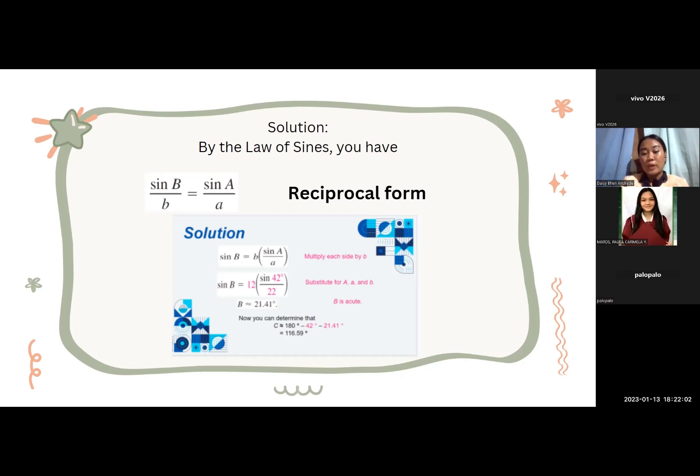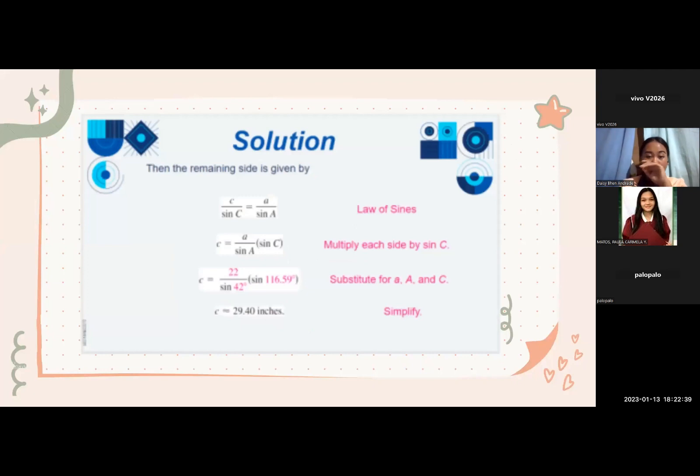So, this will lead us to angle B, which is 21.41 degrees. Now, you can determine that angle C is approximately the answer when we subtract all the angles from 180 degrees. So, this will lead us to 116.59 degrees. Then by law of sines, the remaining side is given by c over sine C is equal to a over sine A.